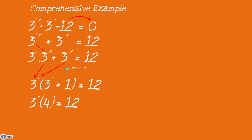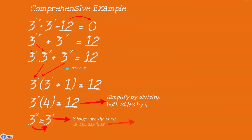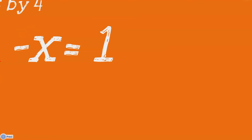What you do to one side of the equation you must do to the other as well. So we divide both sides by 4 and end up with 3 to the power minus x is equal to 3 to the power 1. Because the bases are the same, we can say that minus x is equal to 1. To get x by itself we divide by minus 1, and therefore x is equal to minus 1.